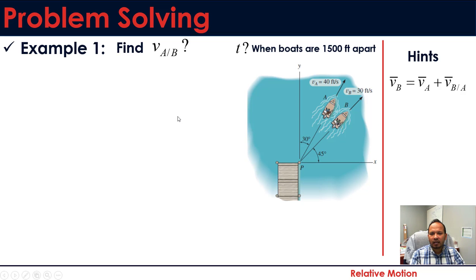In this problem, find vAB. We have to find velocity of A with respect to B. We have to find the time when boats are 1500 feet apart from each other. It's a relative motion problem because we're looking for velocity with respect to B. We know there's no force involved, it belongs to kinematics analysis problem.